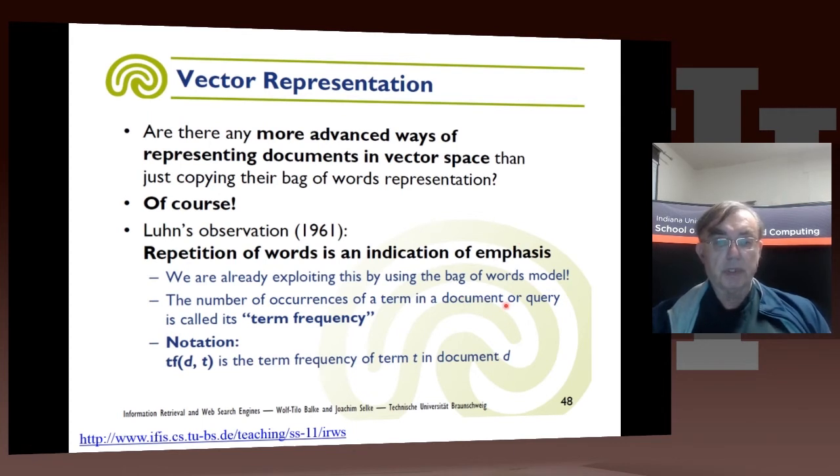So we're exploiting the number of words as an emphasis, an indication of emphasis, because that defines the component of a document. And so that number of times a term occurs is called the term frequency. So tf of d and t is actually, in its simplest form, the actual component of the vector representing d in the t-th dimension.